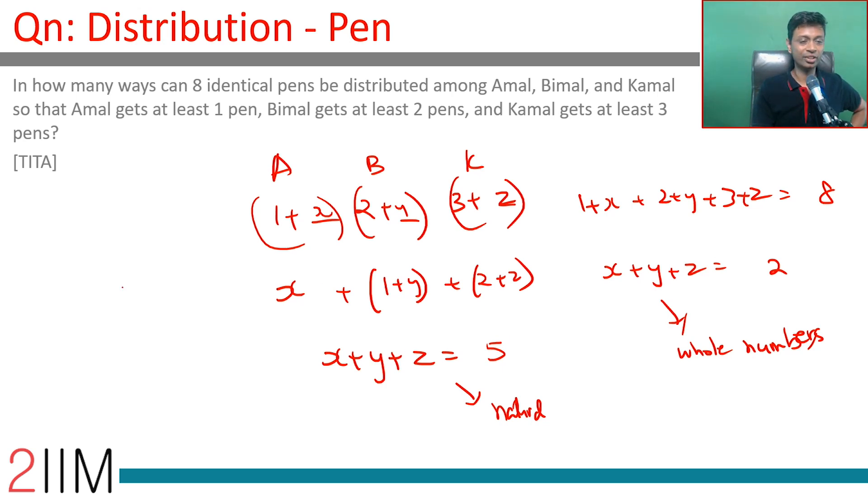Now, if you are talking about this, it's like 1, 5, 1. In some 2 slots, we need to put a plus symbol out of these 4, which can be done in 4c2 ways, which is 6 ways.